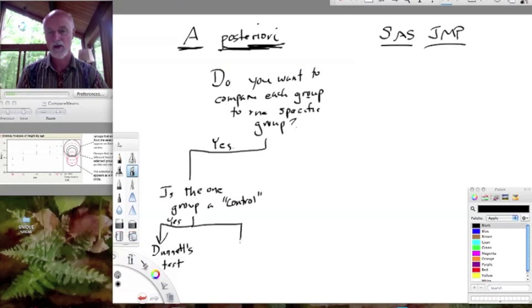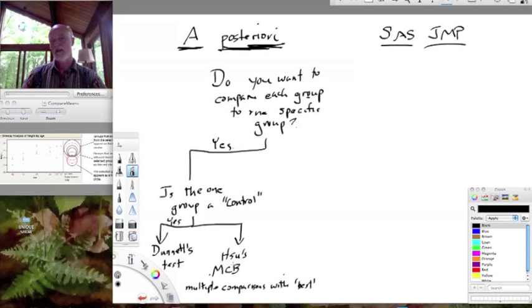And if the other group is not a control, we can use something called Hsu's MCB. And that stands for multiple comparisons with best. I'll put best in quotes. So in this case, you designate which is the group you want to compare it to, and it's either a low group or a high group in terms of the means. So best could be the lowest number, the lowest mean, or it could be the highest mean. And you compare with just the lowest or just the highest. In Dunnett's test, the control group can be in the middle, it can be wherever. But in Hsu's MCB, it's at one end of the mean spectrum. Okay, so here we've answered no - one of the groups is not a control, but we still want to limit our number of comparisons and compare with one group. It might be a maximum or a minimum in the case of Hsu's MCB.